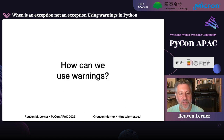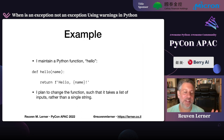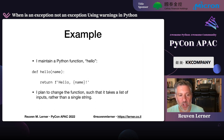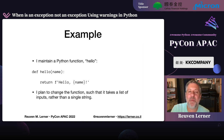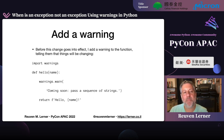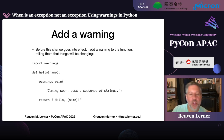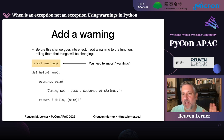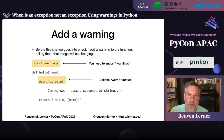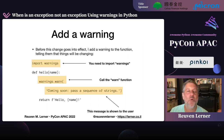So how can we use warnings? Let's take a simple example. I've got a function called hello: 'def hello(name)' takes an argument and returns the string 'hello name.' Now I'm going to change this function so it takes a list of inputs rather than a single string. Before this change goes into effect, I add a warning to the function telling users that things will be changing. The first thing I have to do is import the warnings module — it's part of the standard library but not loaded automatically. Then I call 'warnings.warn()' with a message string.